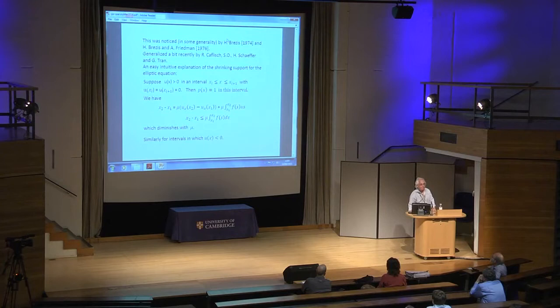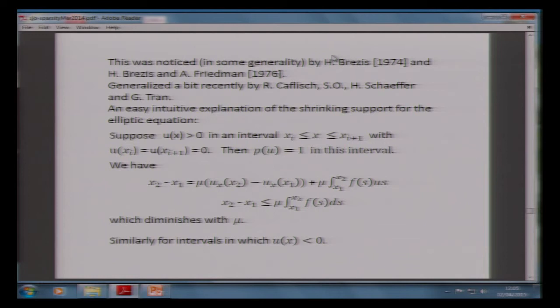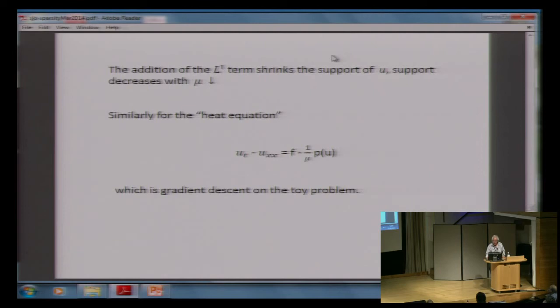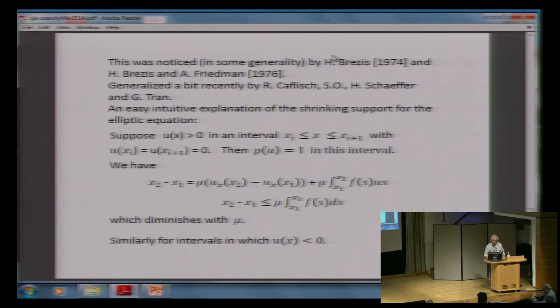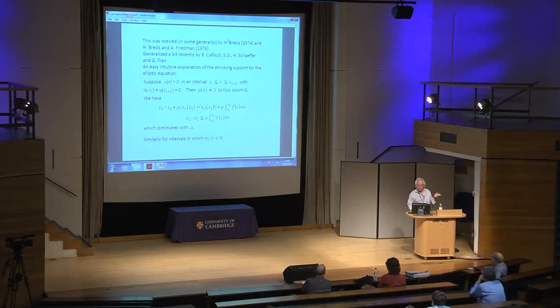Here's the intuition. You can show pretty easily that this thing will shrink the support. Going back to the equation u_{xx} = -f + ..., integrate the equation. If u is positive on an interval, you can show that the length of the interval x2 - x1 is less than or equal to mu times the integral of f. So that gives you an estimate of how long the interval can be. If u was negative, it would go up. In both cases, the length of the interval is bounded by something which goes to zero as mu goes to zero.